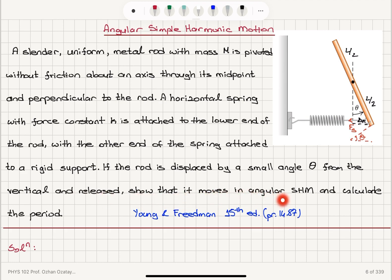show that it moves in angular simple harmonic motion and calculate the period. We can recall that for a uniform rod of mass M, the moment of inertia for rotations about the center of mass axis is (1/12) M L squared. We have seen this in a previous problem, for example problem 1473.